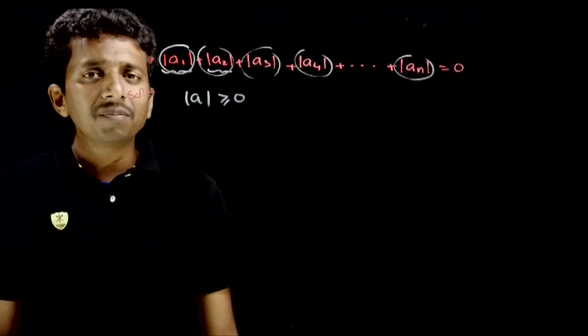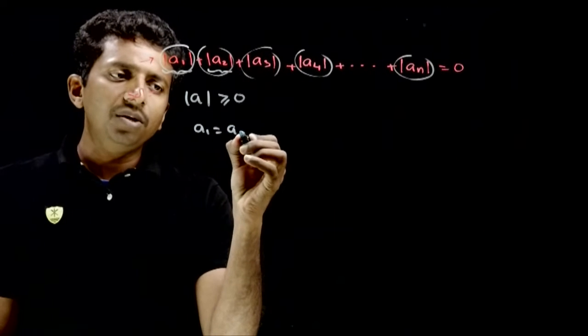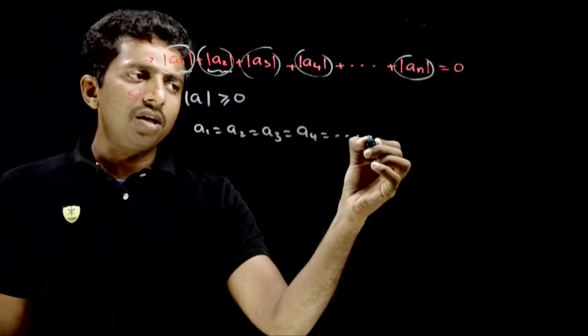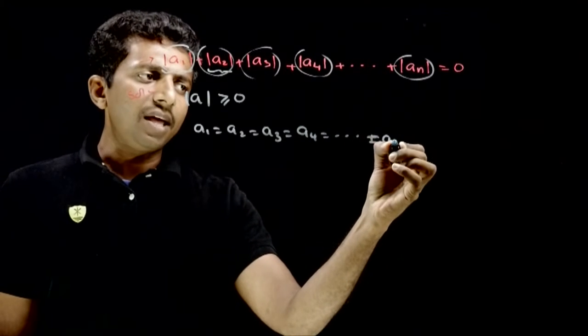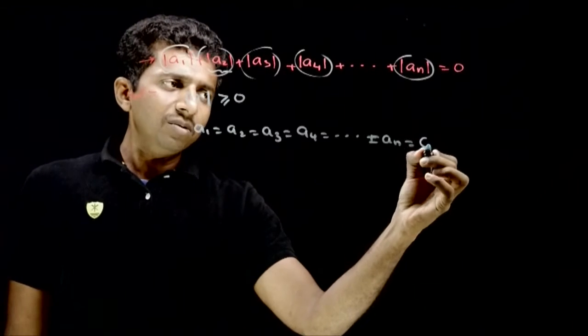So if each of them have to be equal to 0, then our conclusion is a1 is equal to a2 is equal to a3 is equal to a4 and so on, up to is equal to an. All the numbers must be 0, because if the mod is 0 then the number has to be equal to 0.